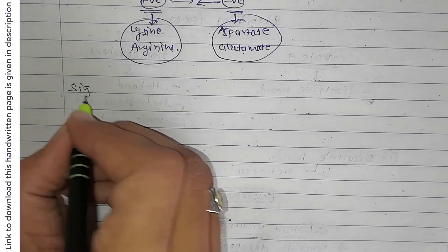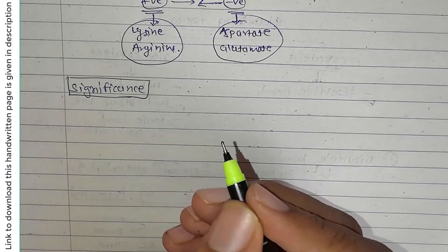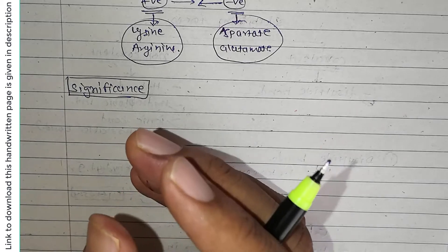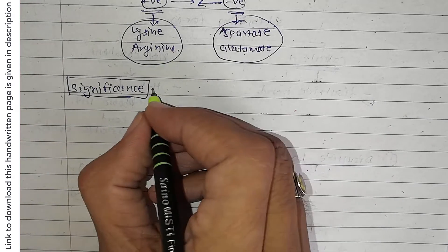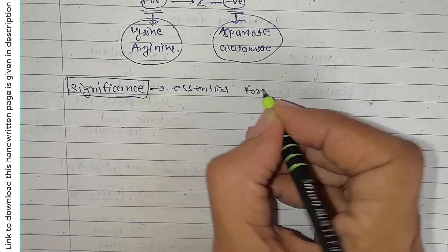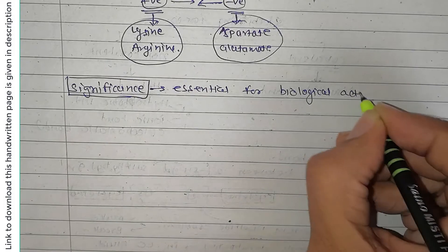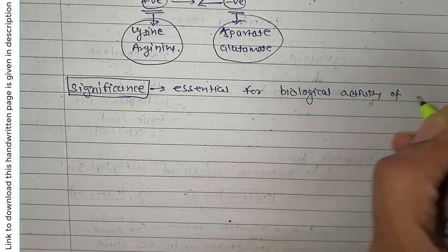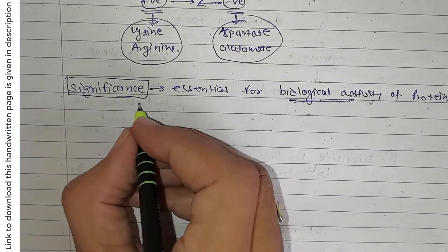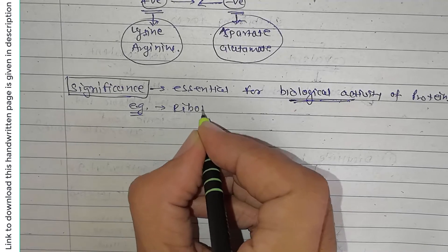Now let's talk about the significance of tertiary structure. The tertiary structure is essential for the biological activity of a protein. One example is ribonuclease.